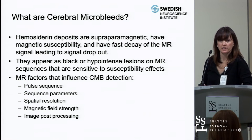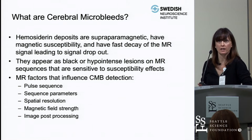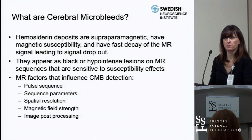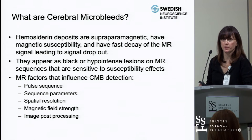The reason you get a dark spot on gradient echo images is that hemosiderin is deposited and picked up by macrophages. Hemosiderin is a blood breakdown product that is very paramagnetic, causing fast decay of the MR signal and signal dropout. These appear as black or hypointense lesions on MR sequences sensitive to susceptibility artifacts.